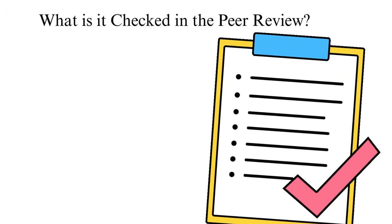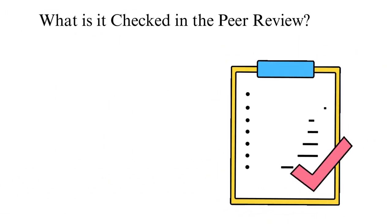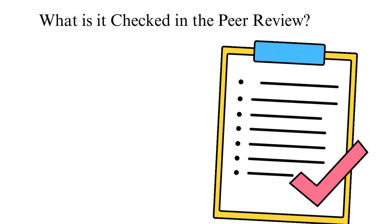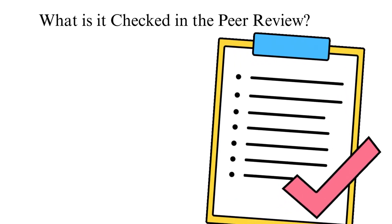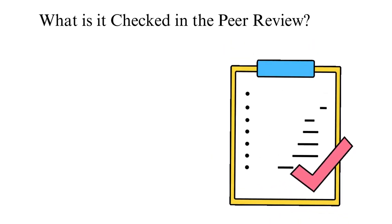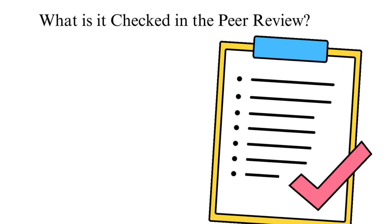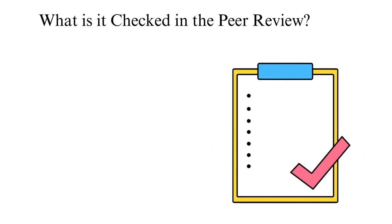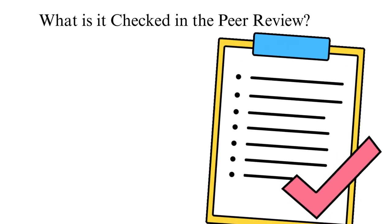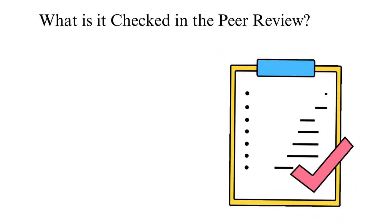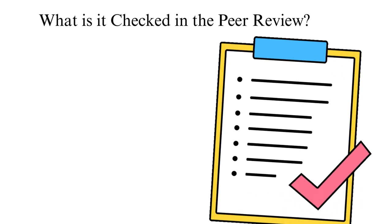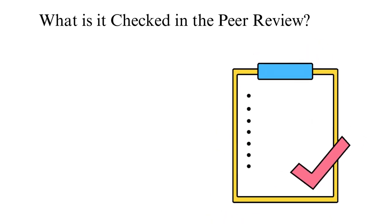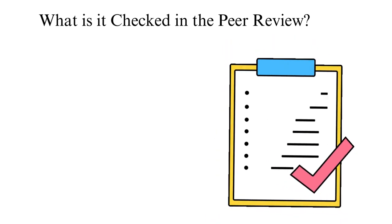What is checked in the peer review? During the evaluation process, the experts check for the following in your paper: 1. A well-informed and comprehensive paper. 2. Valid and well-argued ideas. 3. The contribution of your article to the field of study.